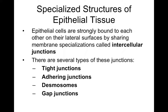Epithelial tissues are densely packed cells held together by intercellular junctions. There are four main types: tight junctions, adhering junctions, desmosomes, and gap junctions. Tight junctions are involved with waterproofing — they prevent water from passing between cells. Desmosomes are a structural component that holds cells together very tightly. Gap junctions allow for communication between cells. Adhering junctions help hold cells together and anchor them to the underlying tissue.